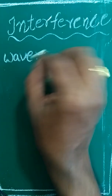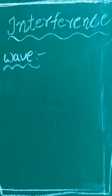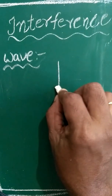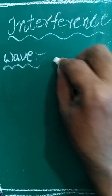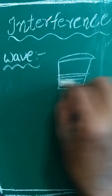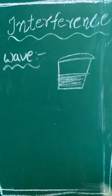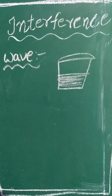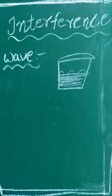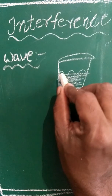A wave is a disturbance created in the medium. For example, if you take a bucket of water, initially the water is totally at rest. Suppose if you drop a pebble or stone — what do we observe? We can observe ripples.